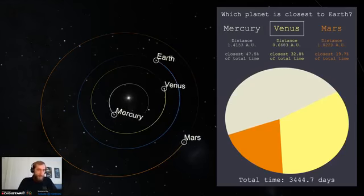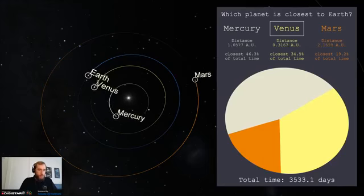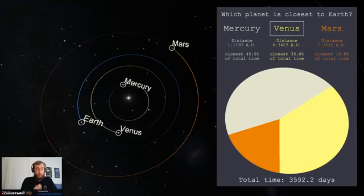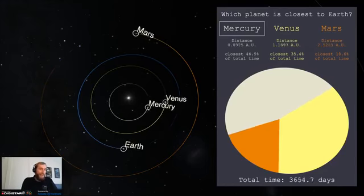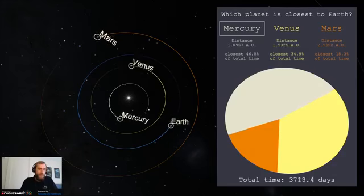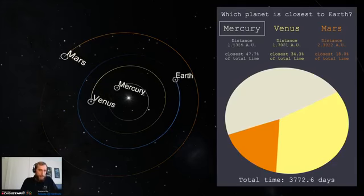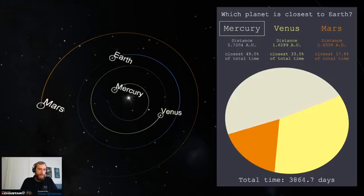So if anybody ever asks you which planet is closest to the Sun, excuse me, which planet is closest to the Earth, your odds-on favorite is going to be to say Mercury. So Mercury, usually the closest planet to the Earth.